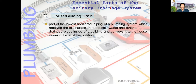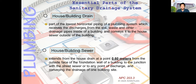The house or building drain is the lowest horizontal piping of the plumbing system, which receives discharge from soil, waste, or other drainage pipes inside the building and conveys it to the sewer outside. The building sewer extends from the building drain at a point 0.6 meters from the outside face of the foundation wall to the junction with the street sewer or any point of discharge. So the stack connects to the building drain, which connects to the building sewer, which connects to the street sewer or public drainage.